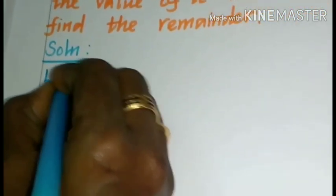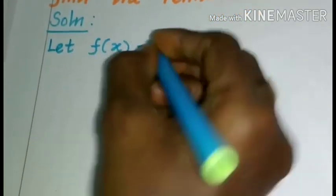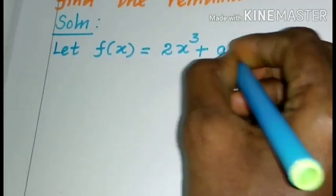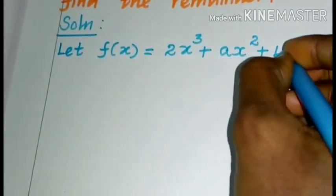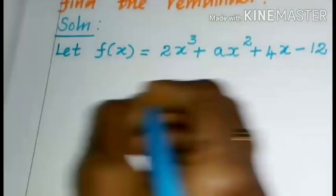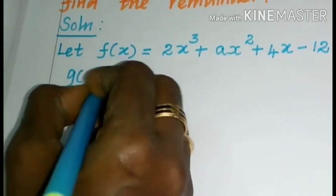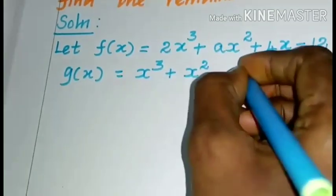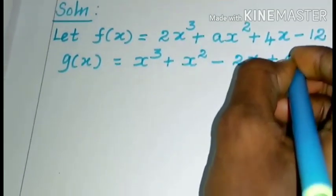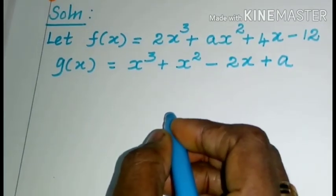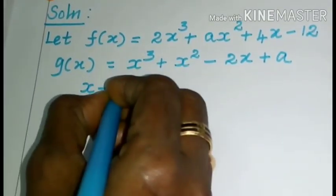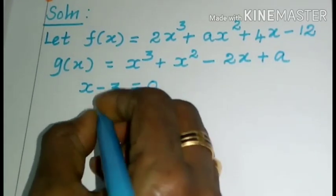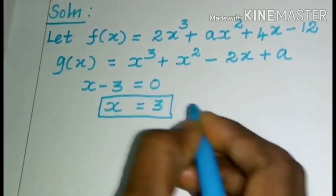Let f(x) = 2x³ + ax² + 4x − 12 and g(x) = x³ + x² − 2x + a. Here we find the zero of the divisor. So x − 3 = 0, which gives x = 3. This is the zero of the divisor.